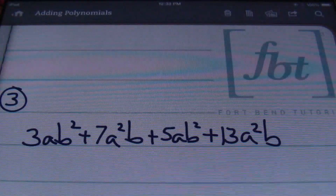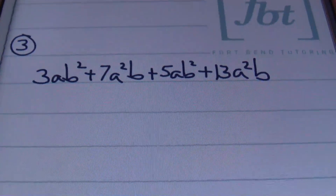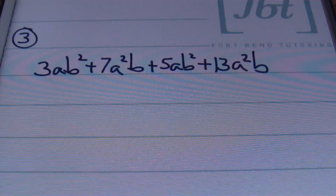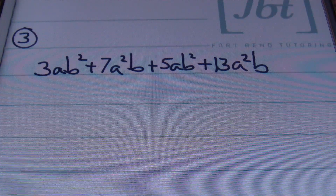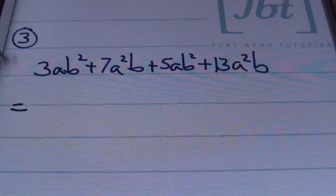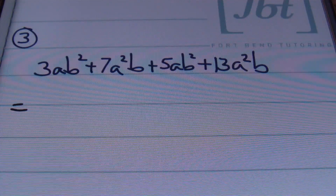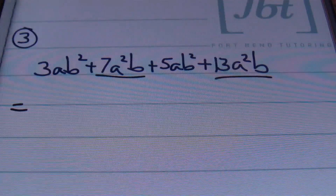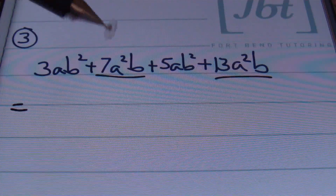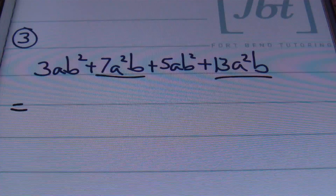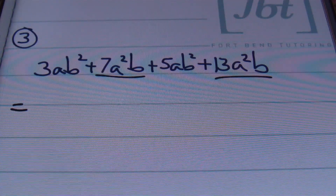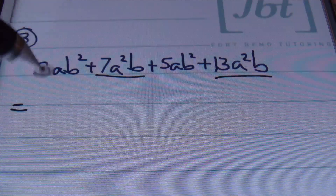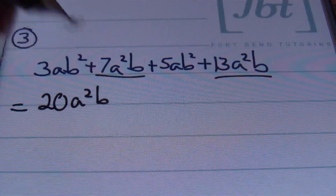Next we have problem number 3. We have 3ab squared plus 7a squared b plus 5ab squared plus 13a squared b. I'm going to start with the term with the highest exponent on a, going in alphabetical order. That's going to be my a squared b terms. I have 7a squared b plus 13a squared b — combining the coefficients, 7 plus 13 gives me 20a squared b.